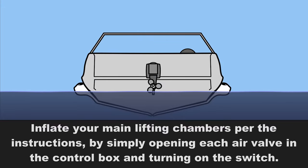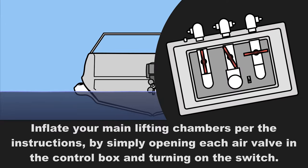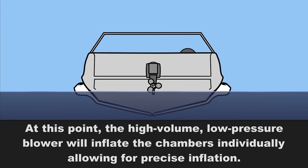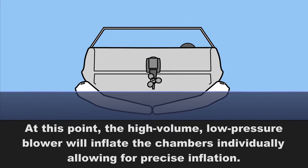Inflate your main lifting chambers per the instructions by simply opening each air valve in the control box and turning on the switch. At this point, the high volume low pressure blower will inflate the chambers individually, allowing for precise inflation.